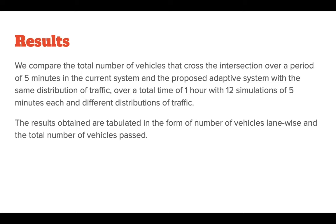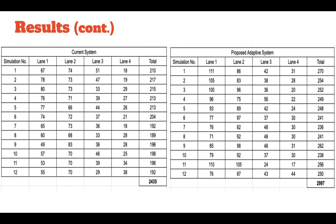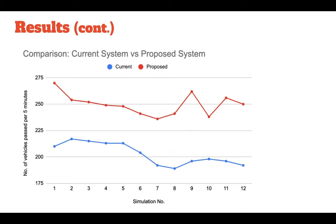To compare our system with the current system, we compared the total number of vehicles that cross the intersection over a total time of one hour with 12 simulations of five minutes each. As we can see, with all conditions alike, the adaptive system was able to pass 2997 vehicles while the current static system could pass only 2435 vehicles in one hour, which means 562 more vehicles passed the intersection in the adaptive system — a significant improvement. The blue line represents the current static system while the red line is the proposed adaptive system. The adaptive system on average allows 48 more vehicles to pass every 5 minutes as compared to the static system.